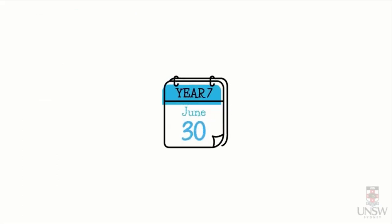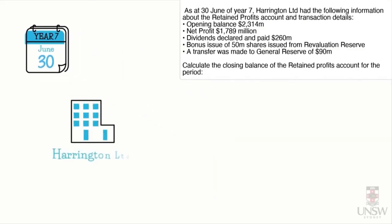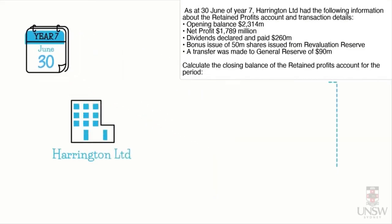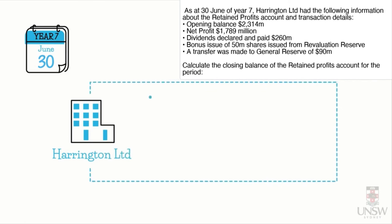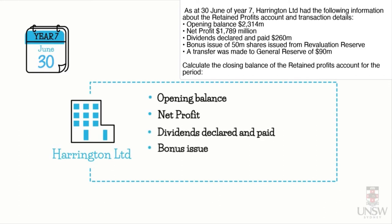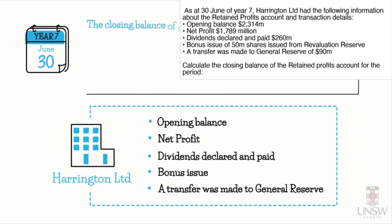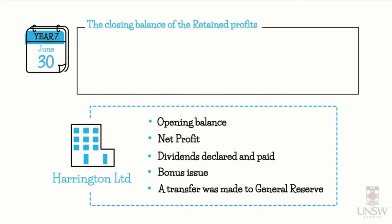The last part of the question covers year seven. As at 30th of June in year seven, Harrington Limited had the following information about the retained profits account: opening balance, net profit, dividends declared and paid, a bonus issue, and a transfer made to general reserve. We're asked to calculate the closing balance of the retained profits account.